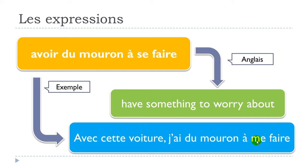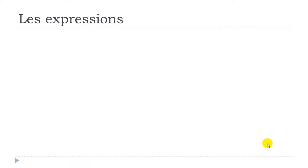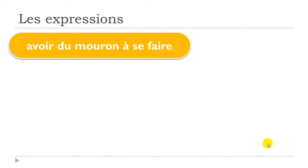Especially this part that comes before your verb, according to the subject. For example: avec cette voiture, j'ai DU MOURON À ME FAIRE. Now let's see how it works for all the persons.